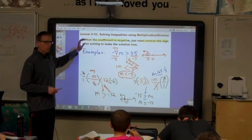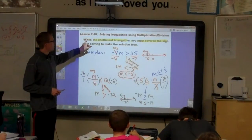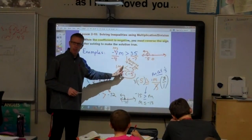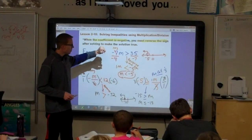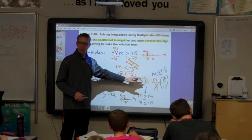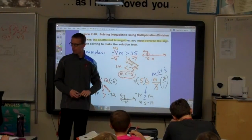And the one thing you have to watch for is whether or not the coefficient, that's the number that's next to the variable, is negative. If it is negative, after you solve it, you must reverse the sign in order to make the solution true.